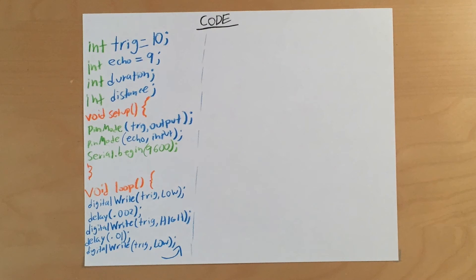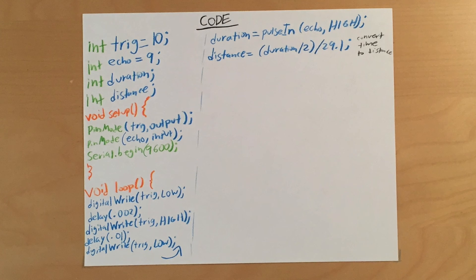In void loop, start out by copying that code which triggers the sound wave, and then set duration equals pulse in echo high. That'll basically just figure out the amount of time it takes for the sound wave to reflect off an object and back into the sensor.